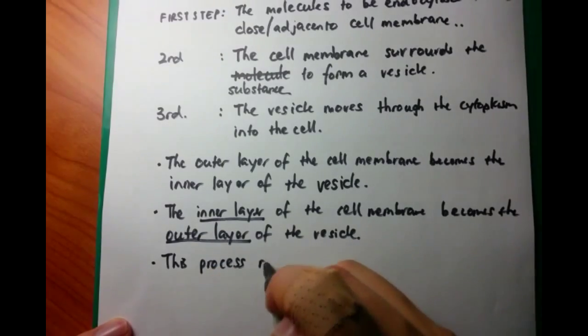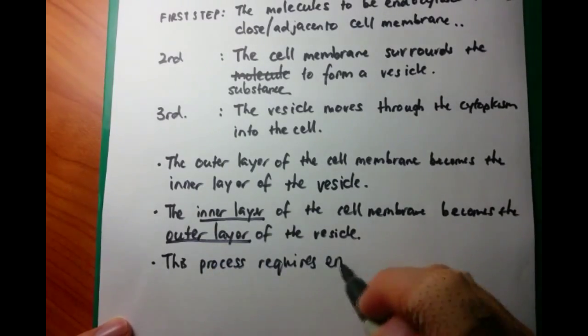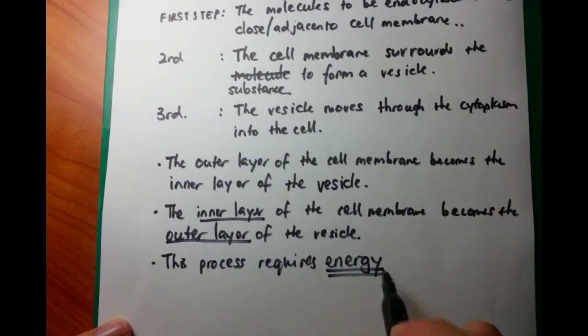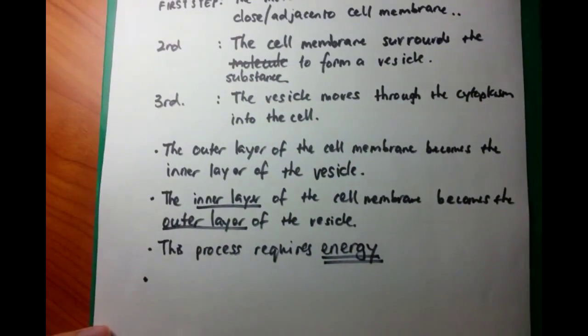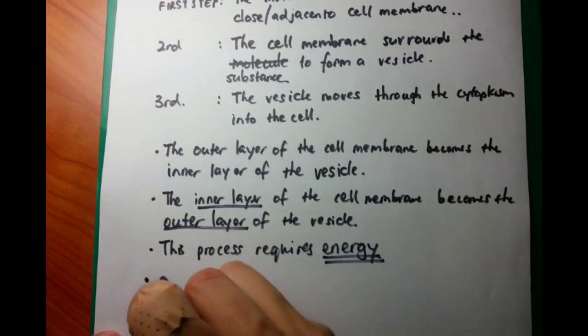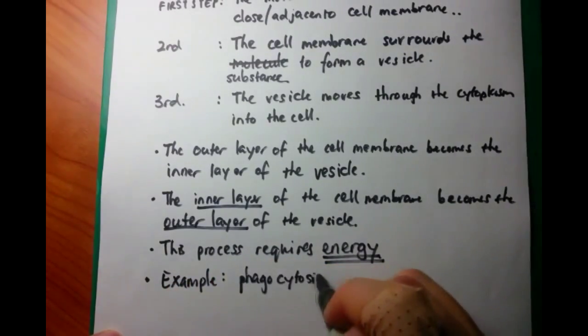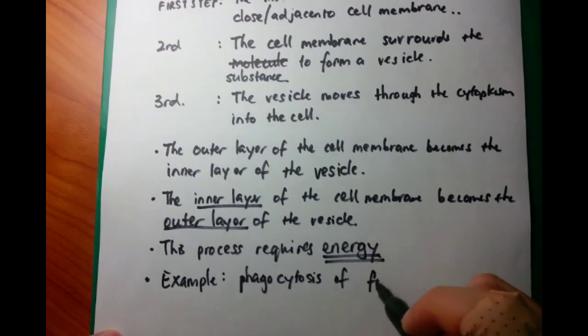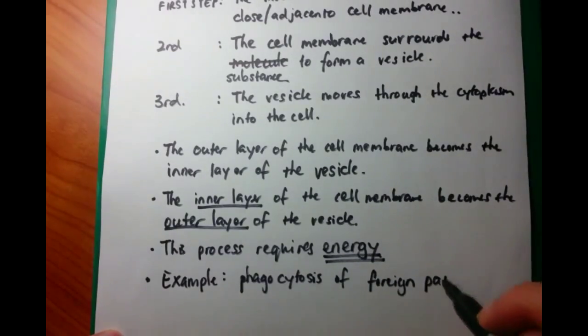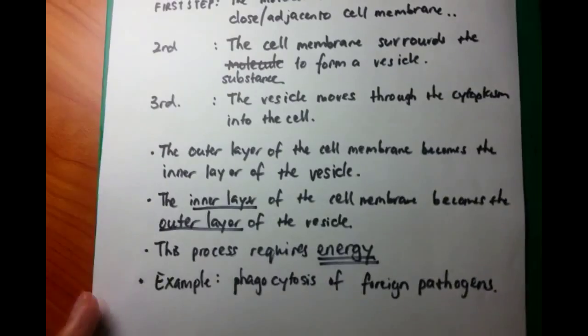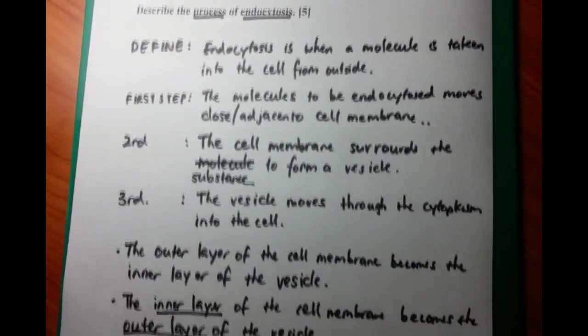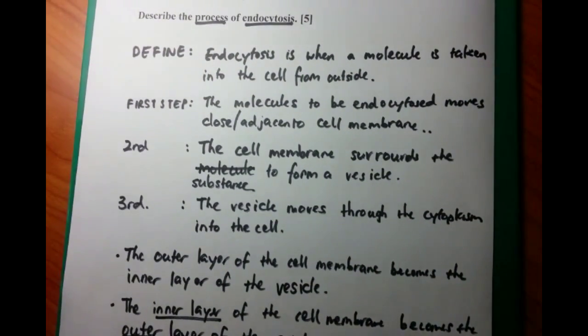Finally, we need an example. One example of endocytosis is when white blood cells bring in foreign pathogens, engulf them, and destroy them. This is how the body protects itself. So this is how I approach this question.